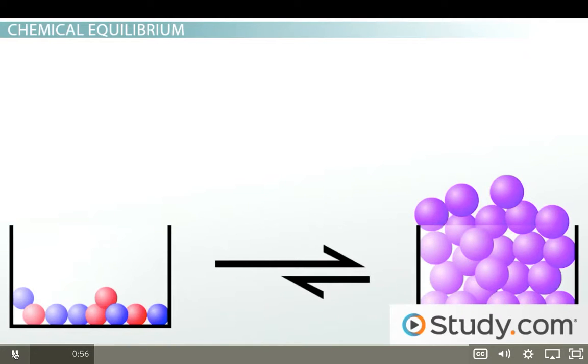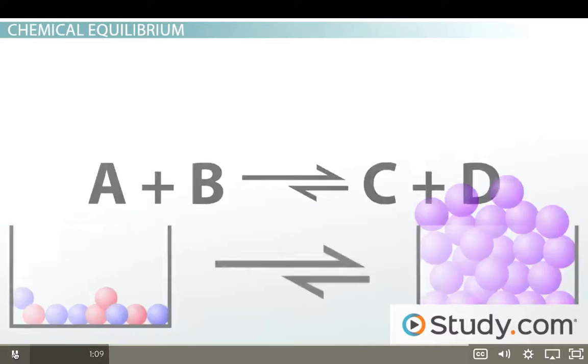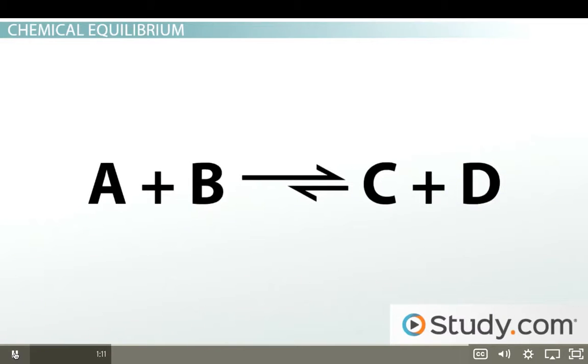The reaction equilibrium lies to the right because there are more products than reactants. In this case, the reaction is written with two different length arrows, with the longer arrow pointing to the right, showing that more product is made than reactant.